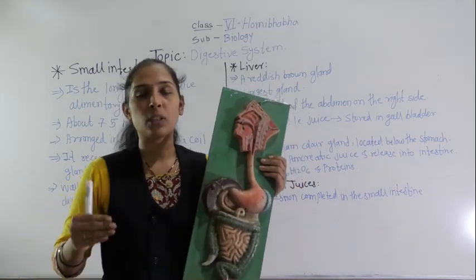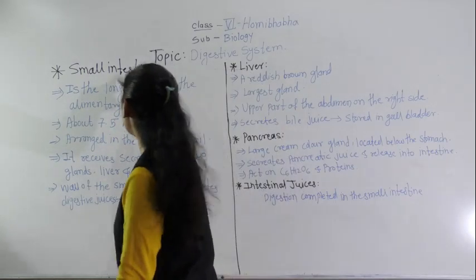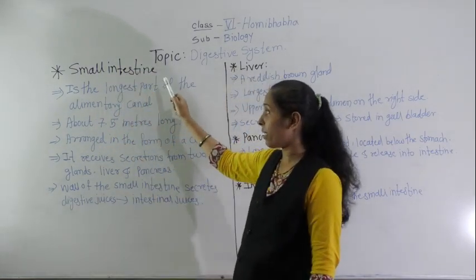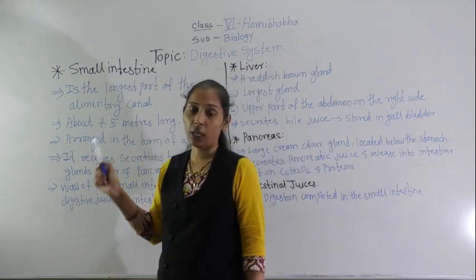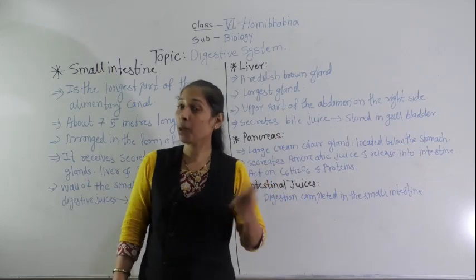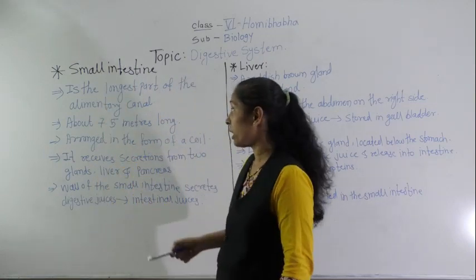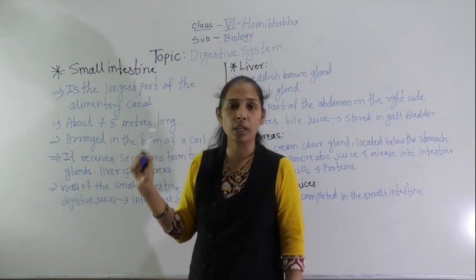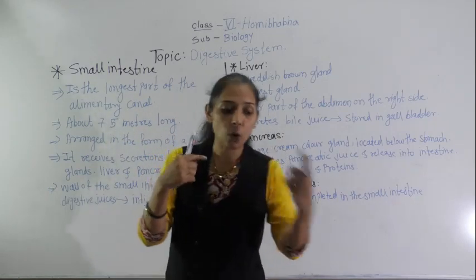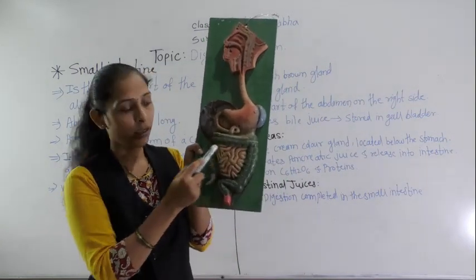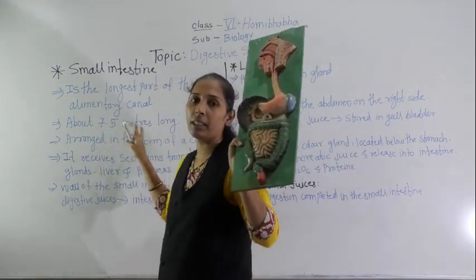Let's see what exactly happens in the small intestine. The small intestine is the longest part of the alimentary canal. Don't get confused between the longest and the widest — the widest part of the alimentary canal is the stomach, while the longest part is the small intestine. It is about 7.5 meters long and is arranged in a coiled form.